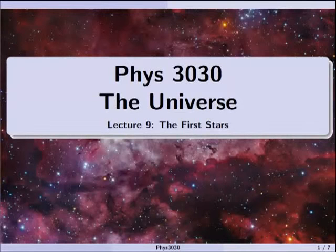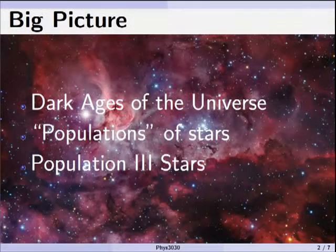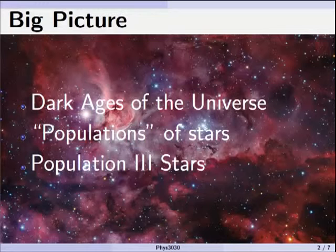Physics 3030, the Universe. This is Lecture 9. In this lecture, we're going to start talking about the stars, and specifically the first set of stars. We start with the Dark Ages of the Universe, then we'll talk about the classification of stars, which is populations of stars, and then specifically Population 3 stars, which really describe the first generation of stars.